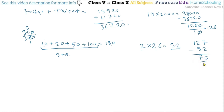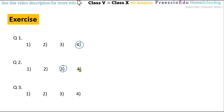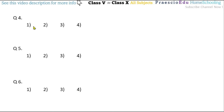To find the number of rupees 5 notes, we divide 75 by 5, which equals 15. There are 15 notes of rupees 5. This is given in option number four.